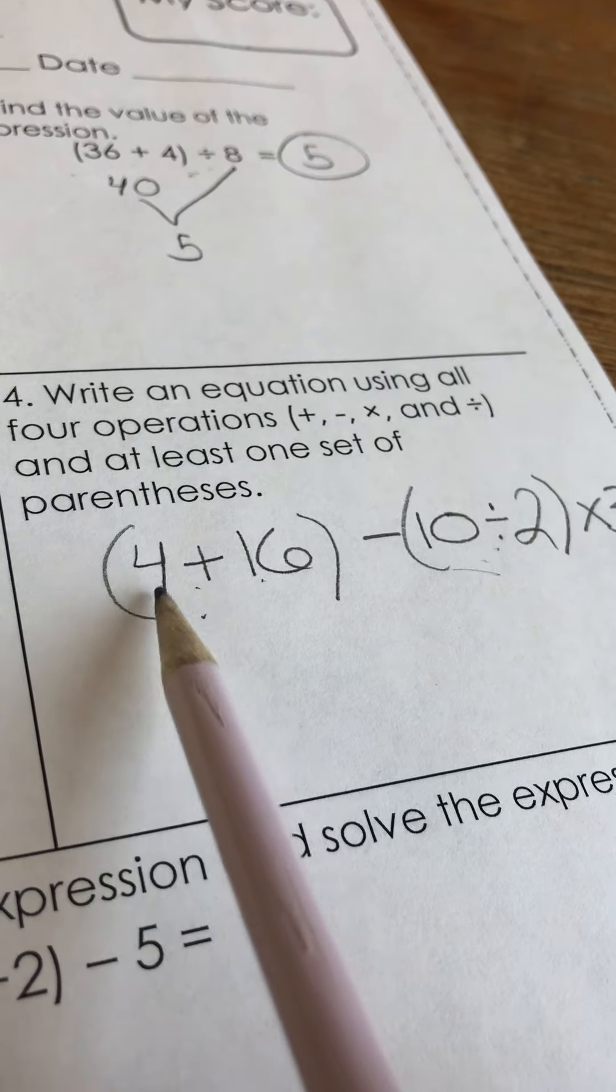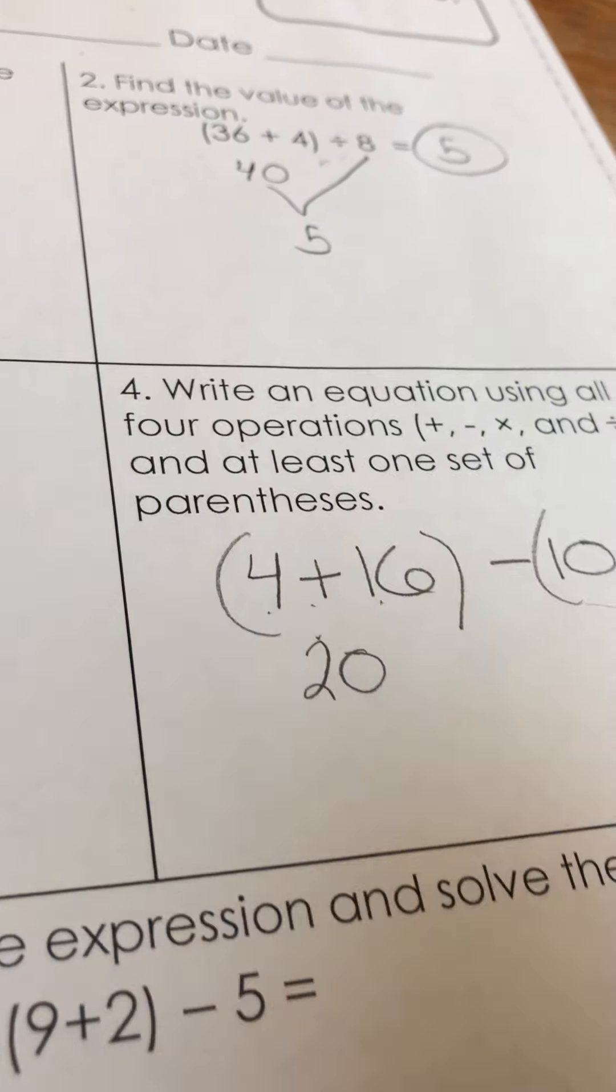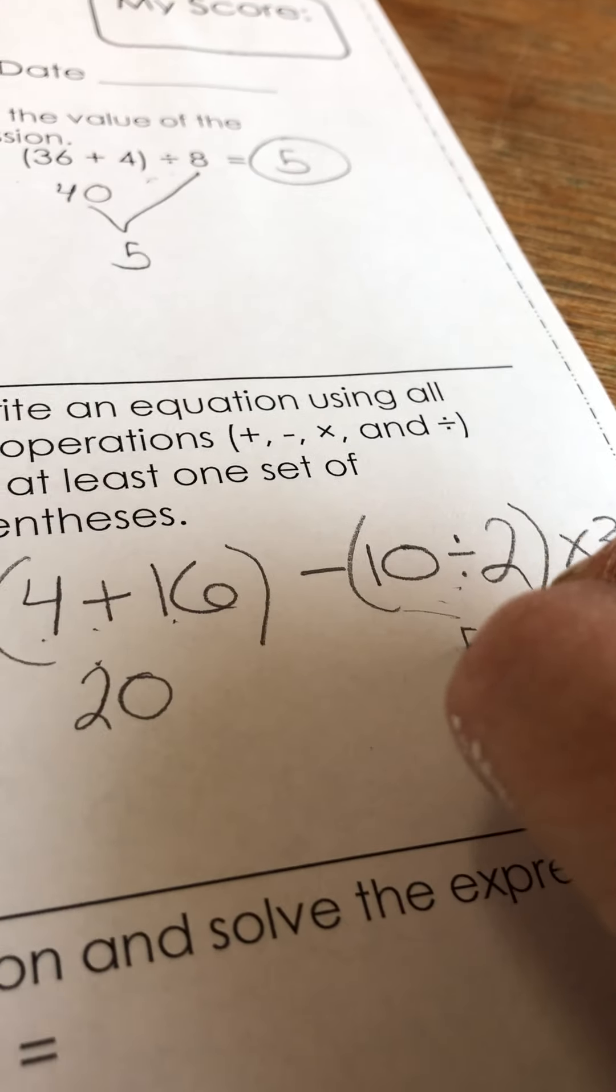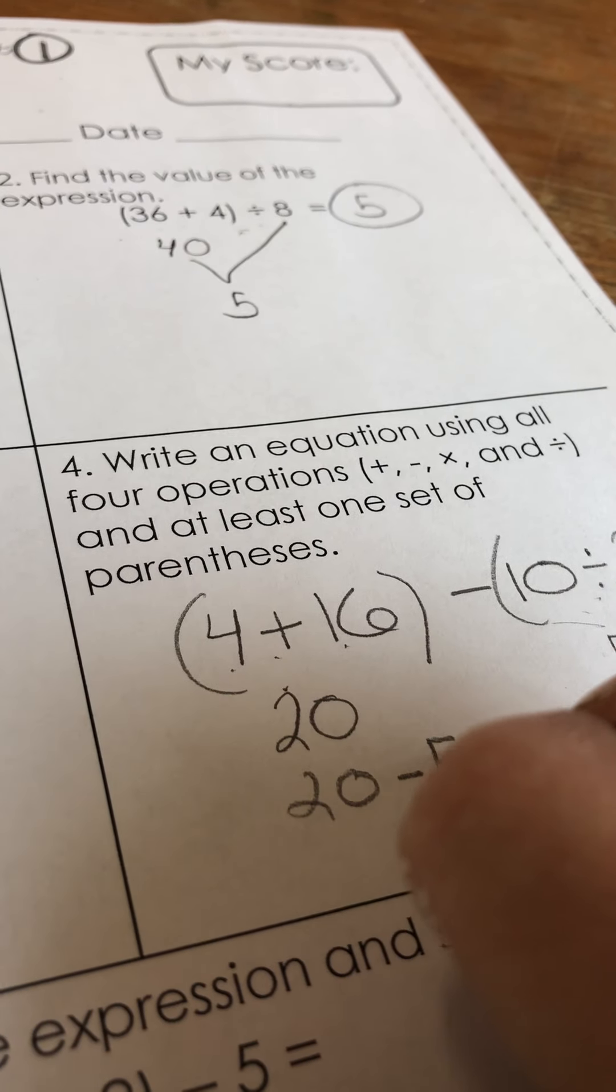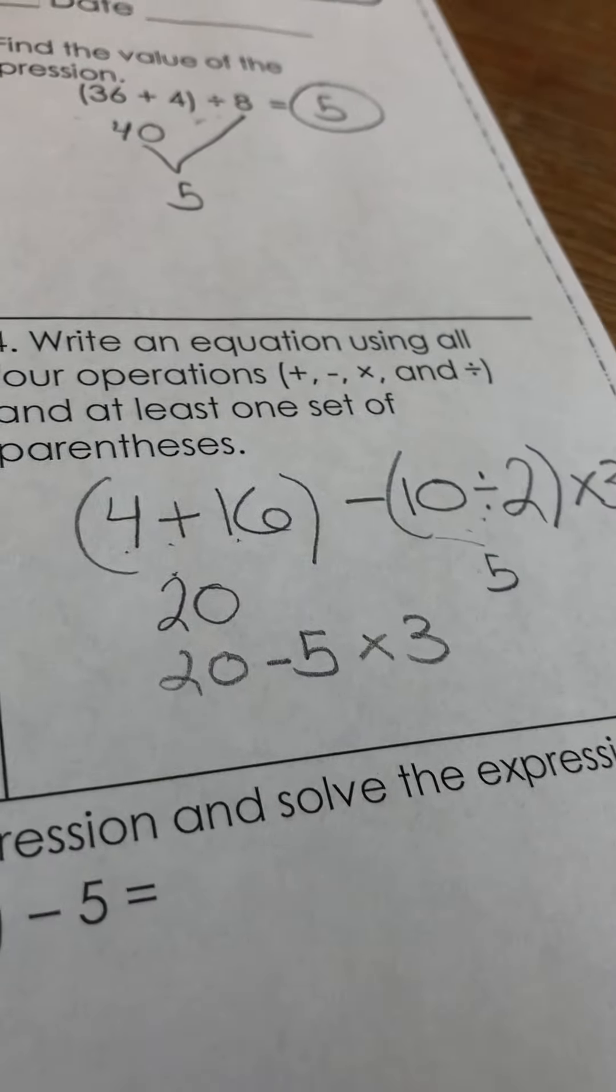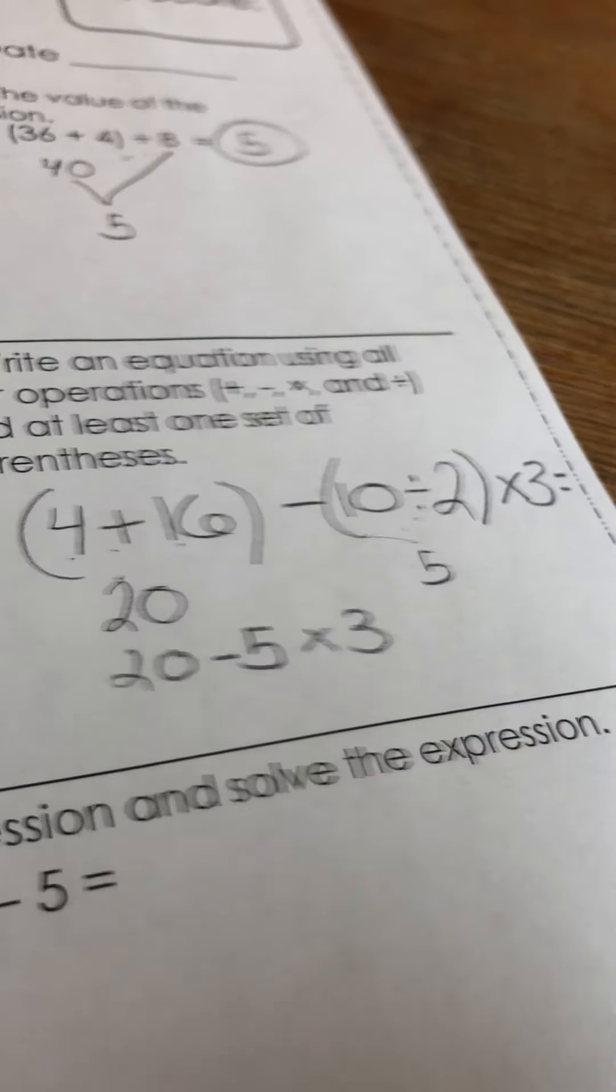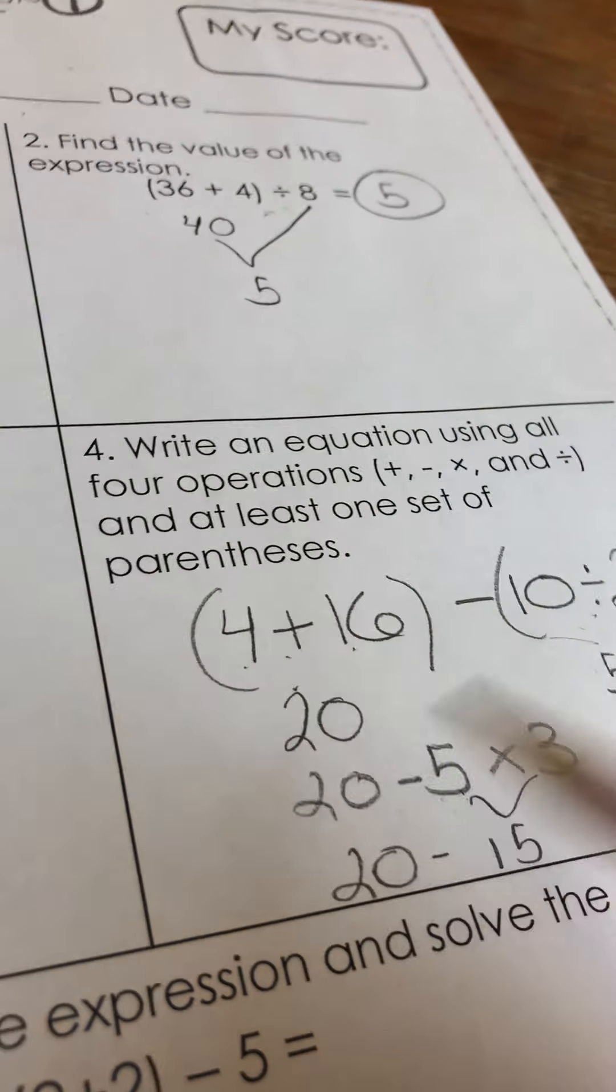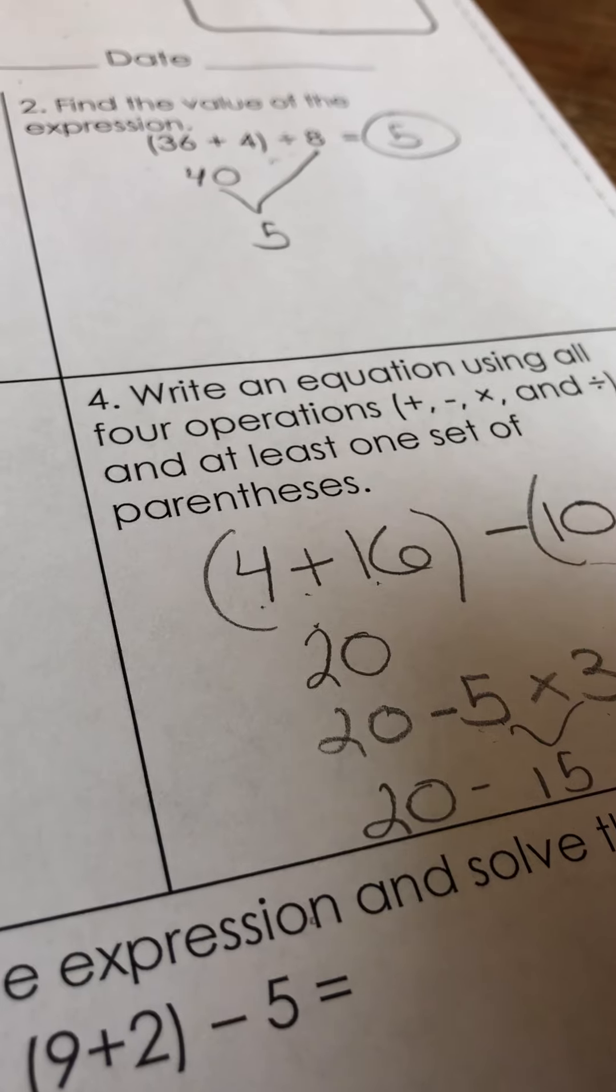Parentheses first. 4 plus 16 is 20. 10 divided by 2 is 5. So now I have 20 minus 5 times 3. According to order of operations, I have to multiply next. So I have 5 times 3 which is 15. And then I have left, I have 20 minus 15. So my equation equals 5.